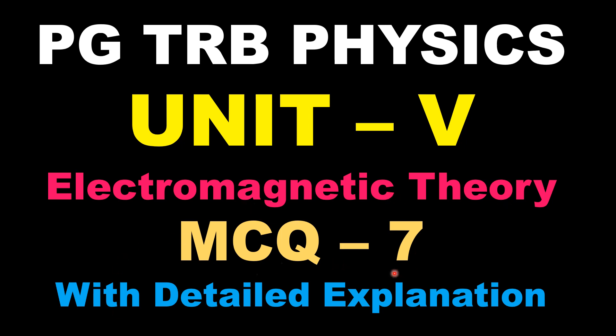Like MCQ 7, with detailed explanation discussed. The first question: a scalar potential field is given as V equals 2x squared minus 3yz plus 3z cubed.